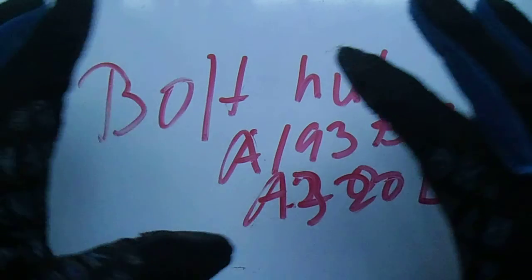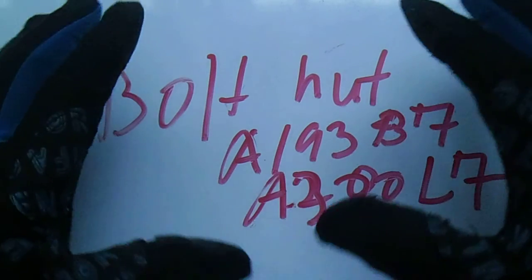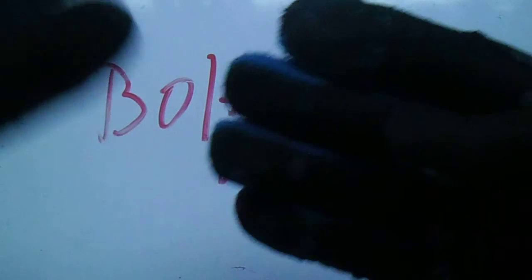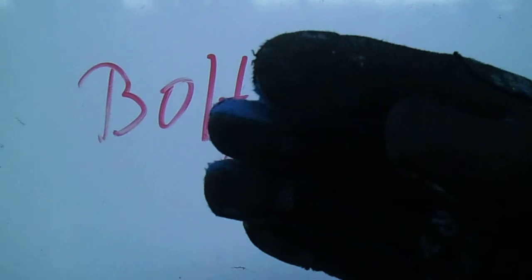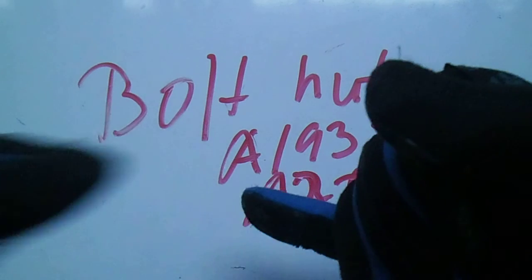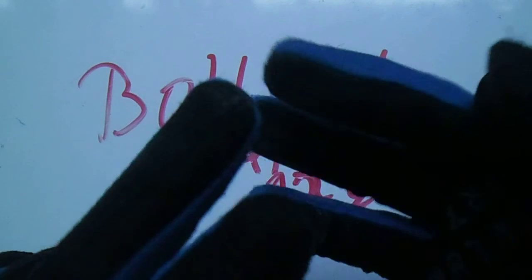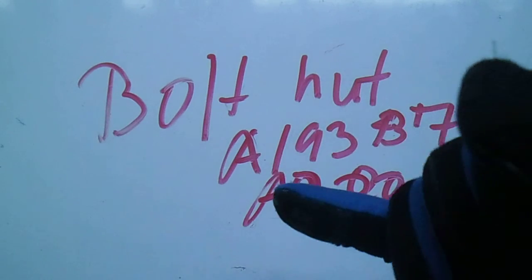That's all for now, guys. Thanks for watching. This video covered color coding for pipes, fittings, gaskets, bolts, and nuts — including the material types, the ASTM codes (American Society of Testing Materials codes), color markings, and schedule thicknesses.